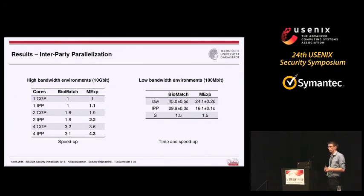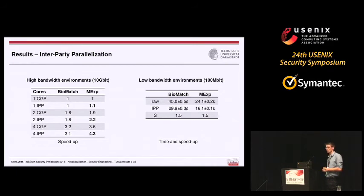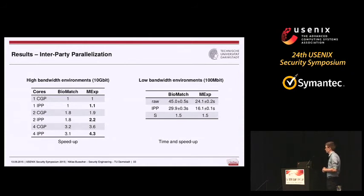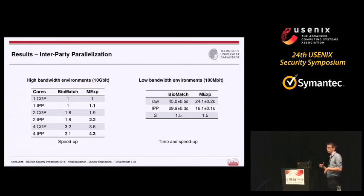In a low-bandwidth environment — 100 megabit — we observe a speedup for both applications, which at first seems surprising since a single core already exceeds the available bandwidth. However, the speedup occurs because we start to use the symmetric communication lines available. Previously the protocol communicated unidirectionally; now we communicate bidirectionally and observe a further speedup.